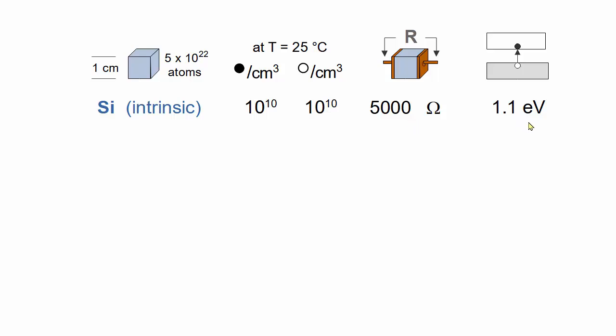This last number is the band gap, the energy required to pull one electron from an atom to make a mobile charge. Silicon doped with boron to 10 to the 14 atoms per cubic centimeter results in 10 to the 14 holes. This is thousands of times more charge carriers than pure silicon, resulting in a significantly lower resistance, 130 ohms.